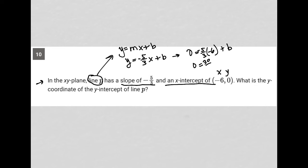So it becomes 30 over three plus b, and that becomes zero equals 10 plus b. Then I can subtract 10 from both sides of the equation and end up with b equals negative 10.